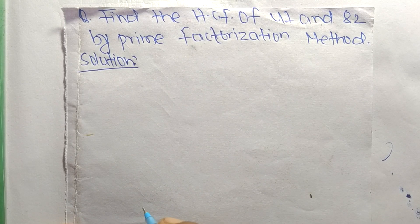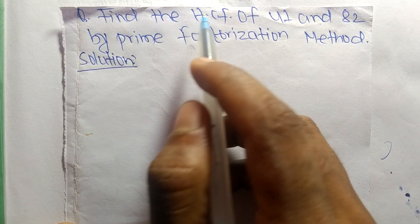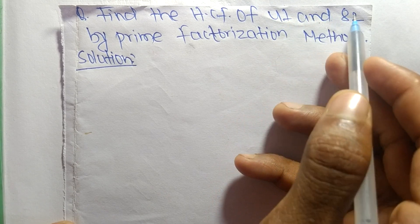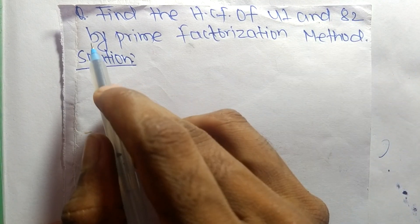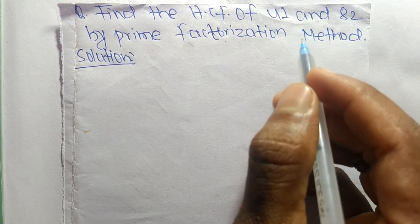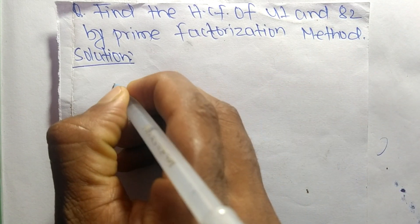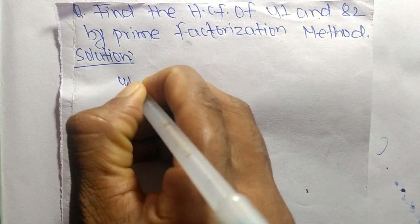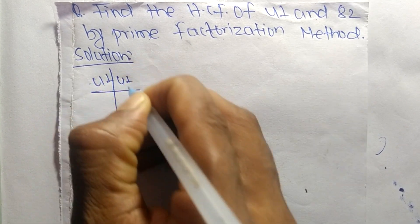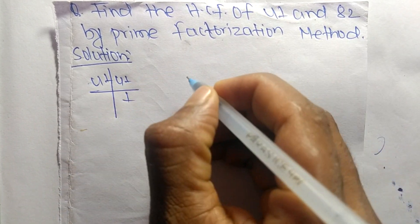Today we shall learn to find the HCF of 41 and 82 by the prime factorization method. First, we find the prime factors of 41. Since 41 equals 41 times 1, the only prime factor of 41 is 41 itself.